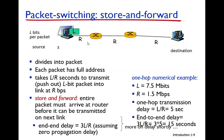We are going to discuss packet switching through another example in more detail. In packet switching, the data is divided into packets. Suppose we have a packet size of L bits. Each packet has a full address — the source address and the destination address, so the packet is moving from source to destination.